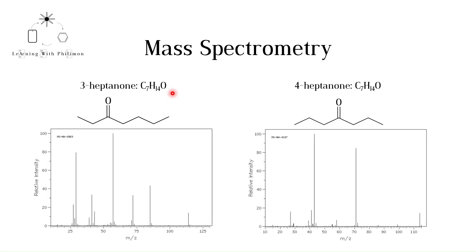However, their two mass spectra have noticeable differences. Both isomers have a molecular ion peak at 114 as expected, as they both have the same relative molecular mass. However, the fragment-ion peaks are very different.